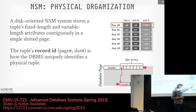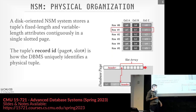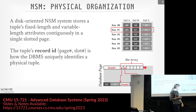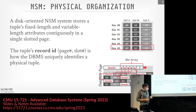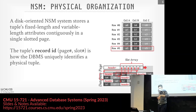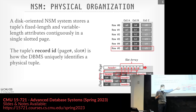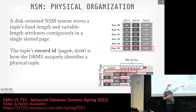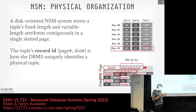The slot array grows from the beginning toward the end, and the tuple data grows from the end toward the beginning. Every single tuple has its own header tracking which values are null and other metadata. The schema is not stored per tuple since all tuples on a page belong to the same table — it's stored centrally in the catalog. The page header may contain a checksum and version information.